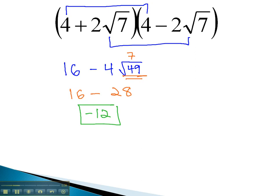Notice when we multiply these conjugates together, we got an answer that had no radicals left in the expression. This property will be very useful to us on some future problems. In the meantime, let's try multiplying another set of conjugates together.